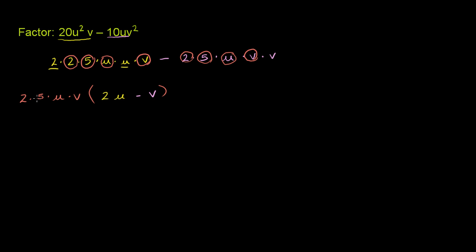And hopefully you see, if I multiply 2 times 5 times u times v times 2u, I'm going to get this first term here. So if I were to distribute it, I would get this first term. And if I multiply 2 times 5 times u times v times this v over here, I'm going to get this second term. So this expression and that expression is the exact same thing.